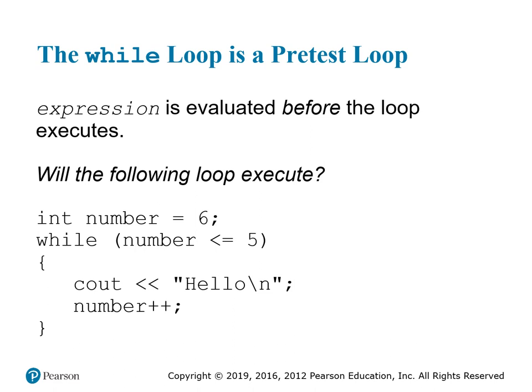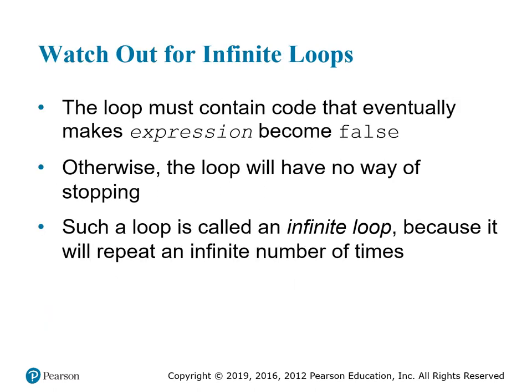The while loop is a pre-test loop — the expression is evaluated before the loop executes. Ask yourself: will this loop ever execute if number starts at six and the condition is while number less than or equal to five? Since six is not less than or equal to five, that immediately kicks us out — we never get any output. The opposite problem is a loop that continues forever: the loop must contain code that eventually makes the expression false, otherwise it's an infinite loop.